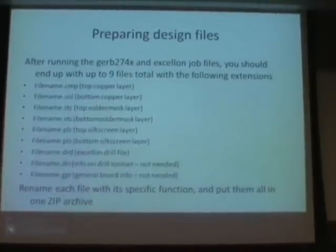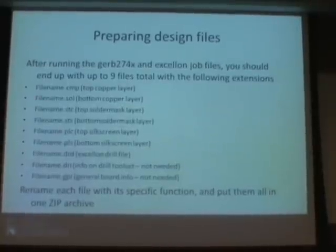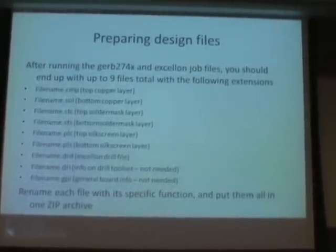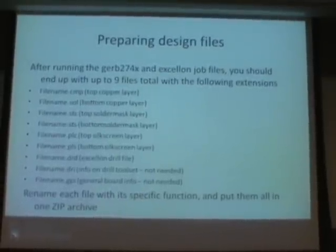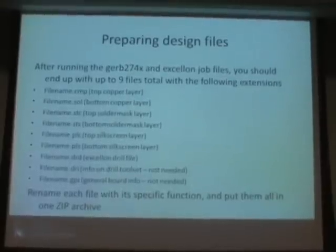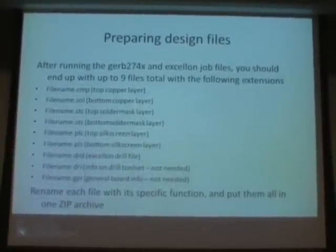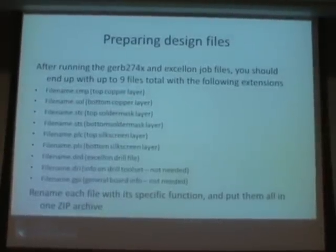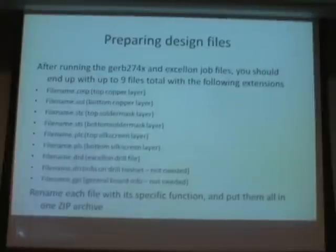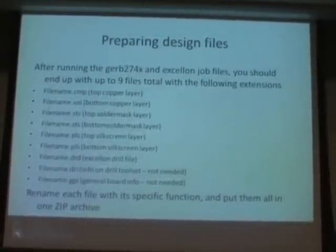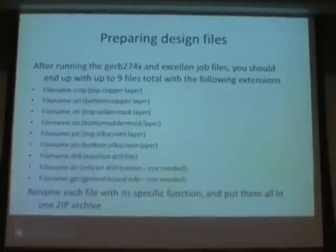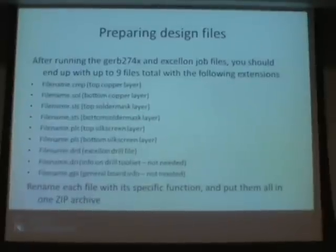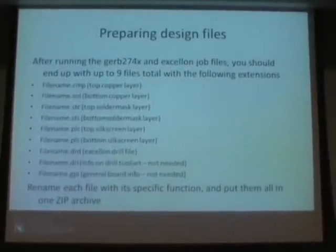For a normal two-layer design you'll get a total of nine files. Not all are useful, but for a design with two copper layers, solder mask on both sides, and silkscreen on both sides, you'll get two copper layers, two solder mask layers, two silkscreen layers, a drill file, and two text files called DRI and GPI. Those are human-readable and can be sent to the manufacturer, but aren't usually necessary since the manufacturer can determine what's in them without looking.